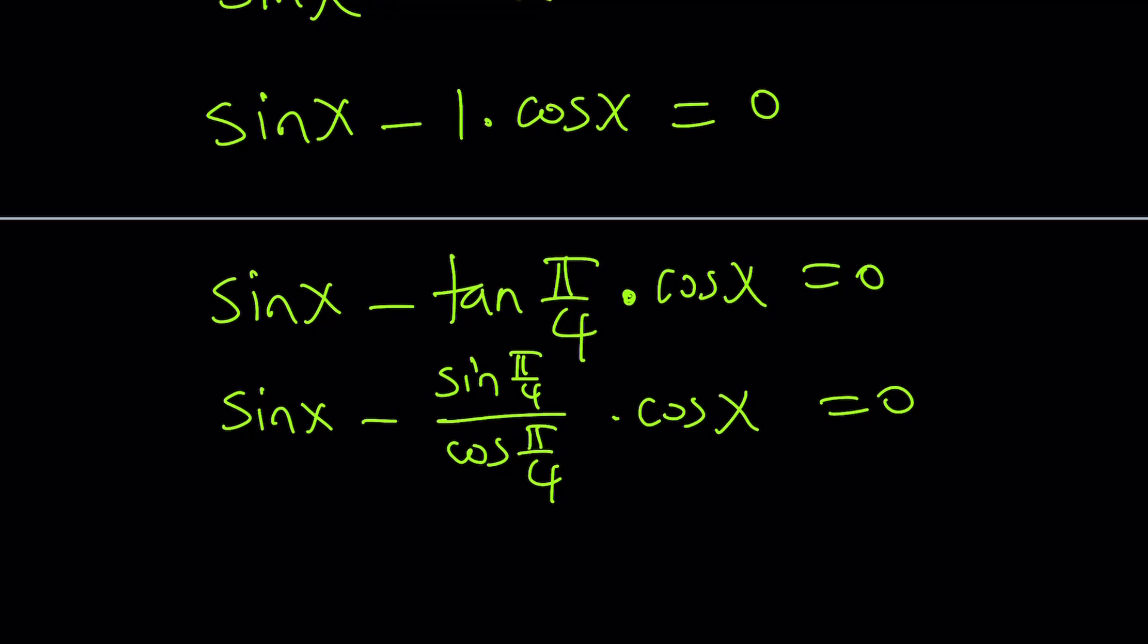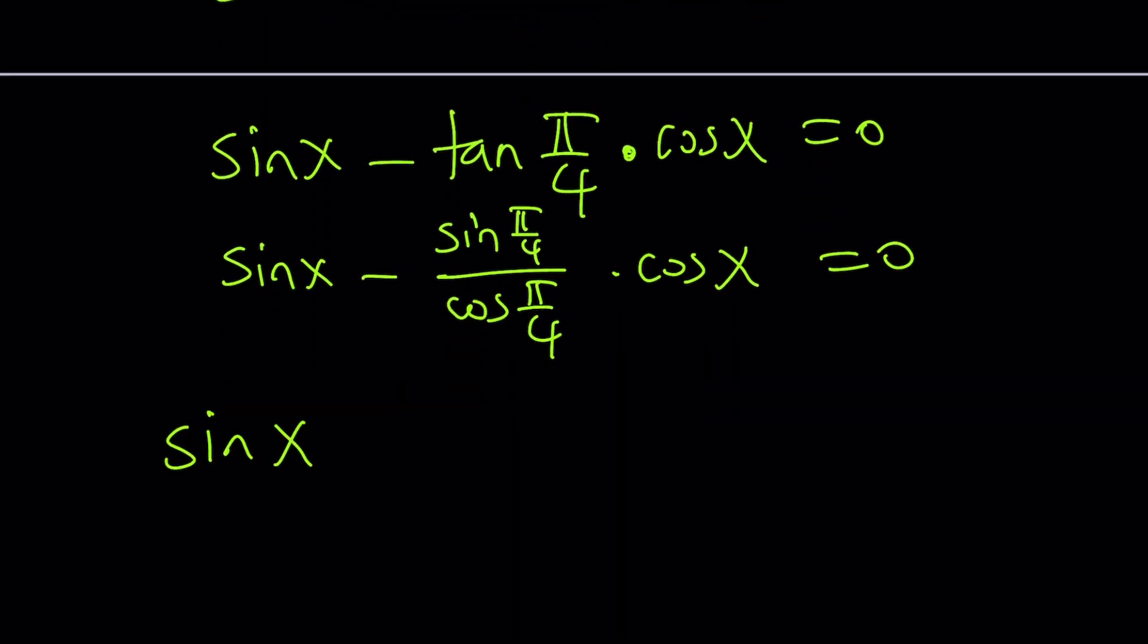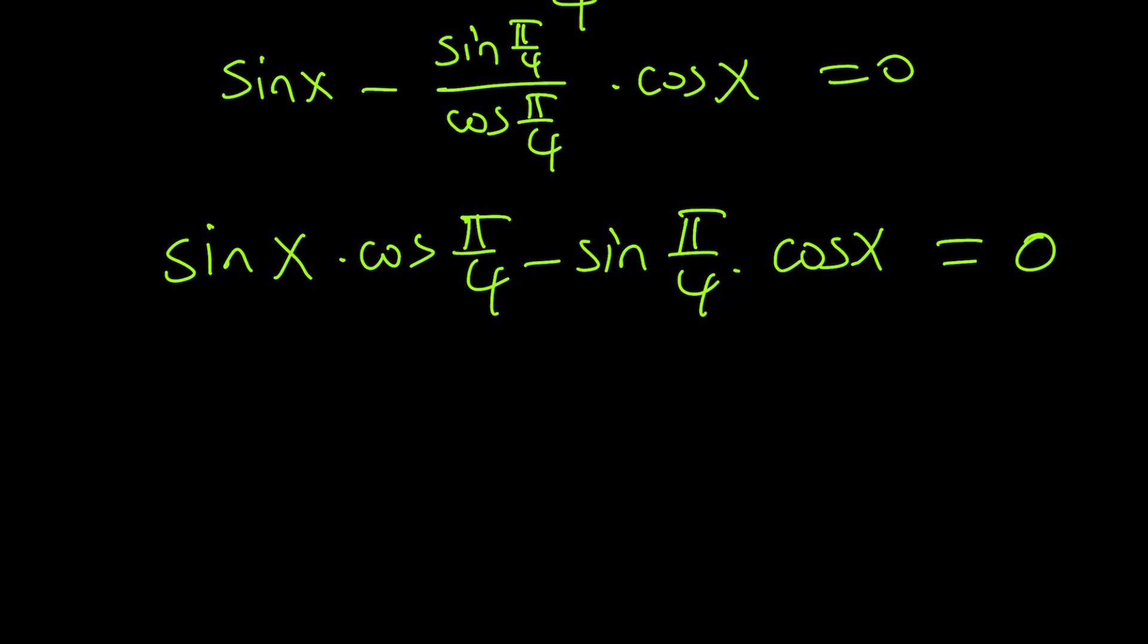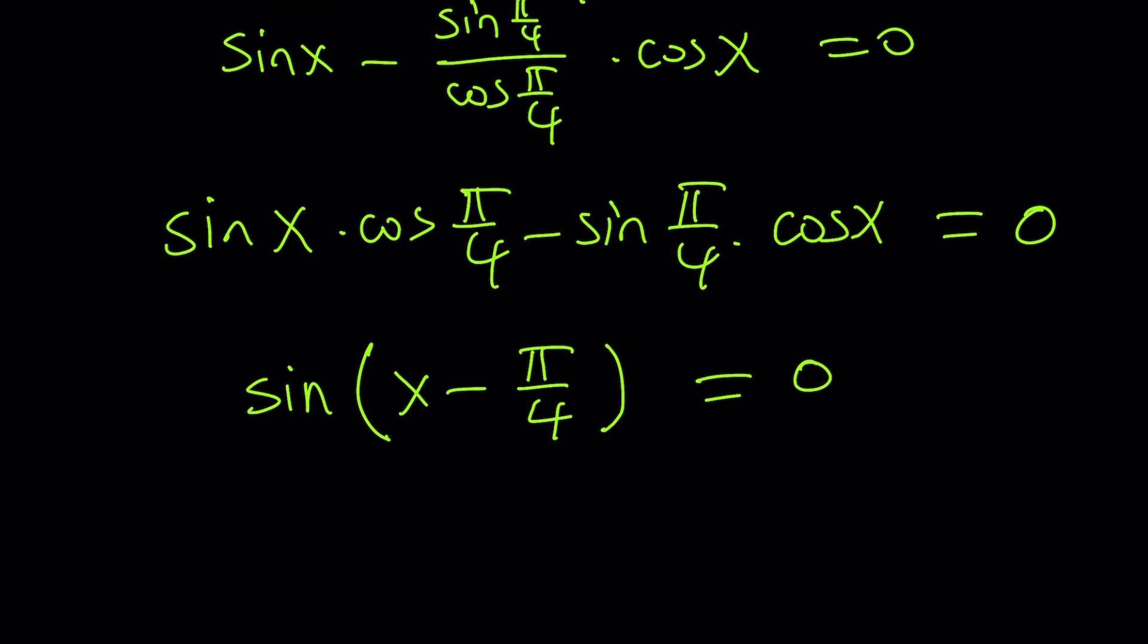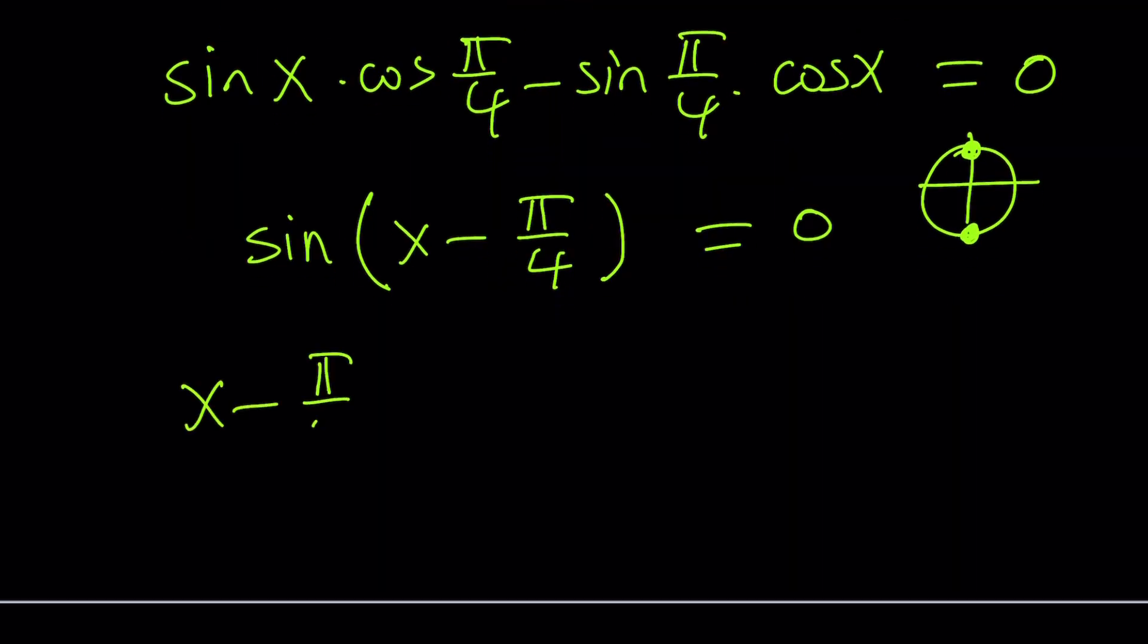Now you can multiply everything by cos(π/4). That's going to give you sin x cos(π/4) - sin(π/4) cos x equals zero. The left-hand side looks like sin a cos b - sin b cos a. This is sin(x - π/4). This is an identity, the sum and difference formulas. If sine of something is equal to zero, then there are two possibilities on the unit circle: π/2 or 3π/2. So x - π/4 can only be π/2, and from here you get x equals 3π/4.